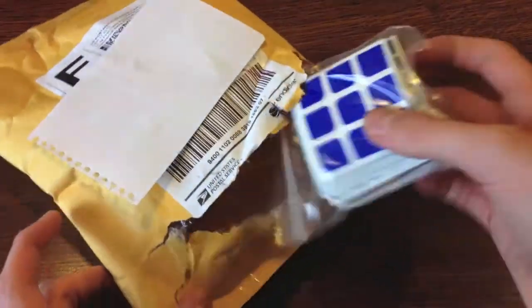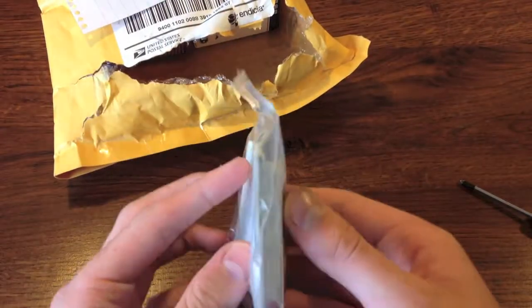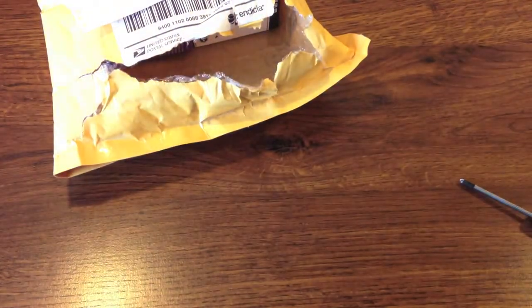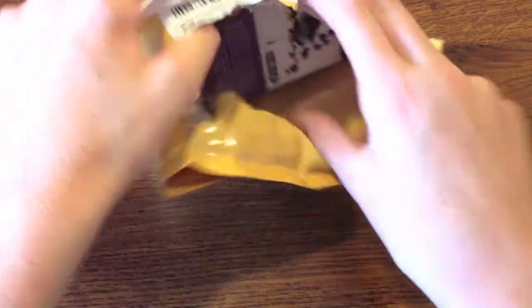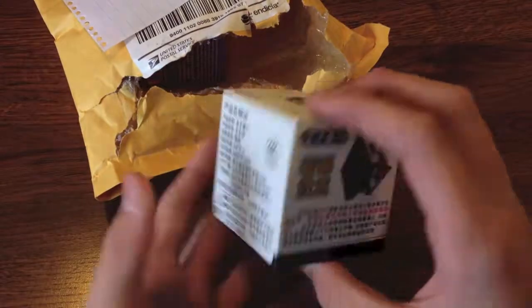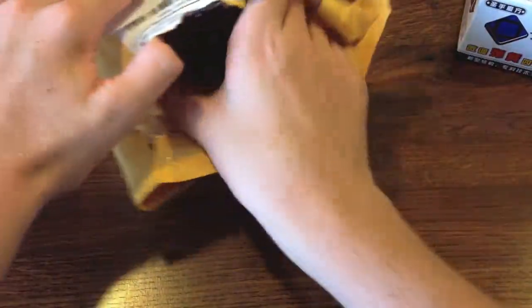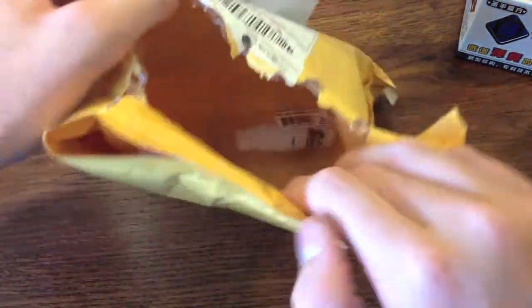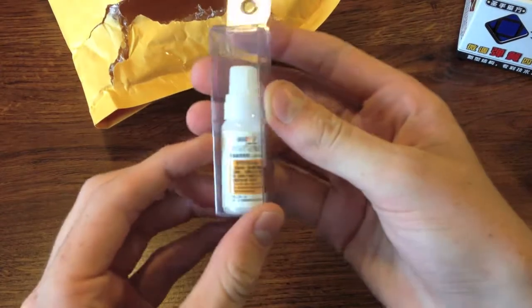Okay, so inside the package we have a very thick pack of stickers. You can see there's a ton of stickers in there, so we'll get into that. We have a Shangsha 4x4 V5, and here's a Shangsha Aurora, and one more thing in here, we have some Maru lube.